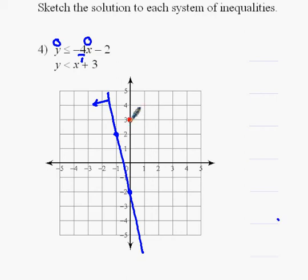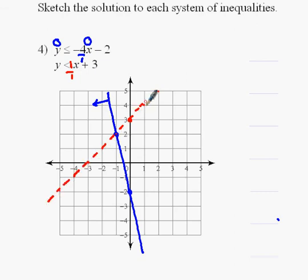The next one in red crosses at positive 3 and has a slope of 1, which is 1 over 1, so we go up 1, right 1 — we'll do that a couple times to see where the line goes. It's just less than, so we need a dashed line. Testing (0, 0): if I put 0 in for y and 0 in for x, I get 0 is less than 3 — that's true. So I should be shading toward the point (0, 0), and that's the direction I'll shade the red one.